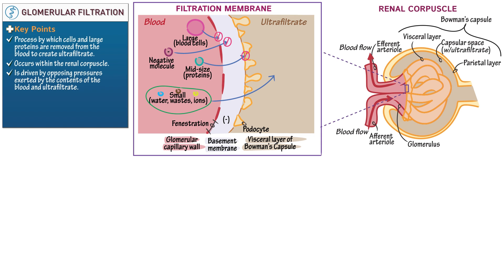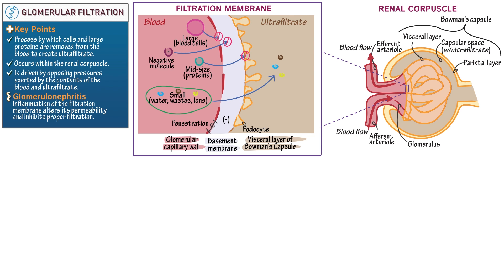Finally, show that the smaller molecules pass freely through each layer and are components of the ultrafiltrate. To note that glomerulonephritis involves inflammation of the filtration membrane, which alters its permeability and inhibits proper filtration, which can be fatal. Signs include the presence of blood or proteins in the urine.